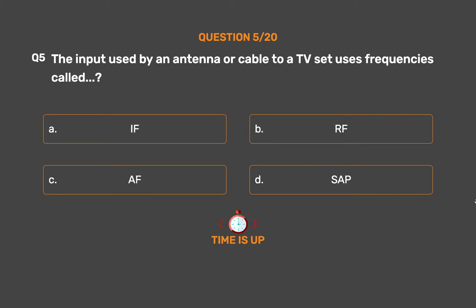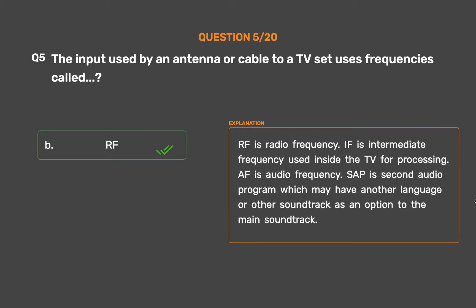The correct answer is Option B: RF. RF is radio frequency. IF is intermediate frequency used inside the TV for processing. AF is audio frequency. SAP is second audio program, which may have another language or other soundtrack as an option to the main soundtrack.